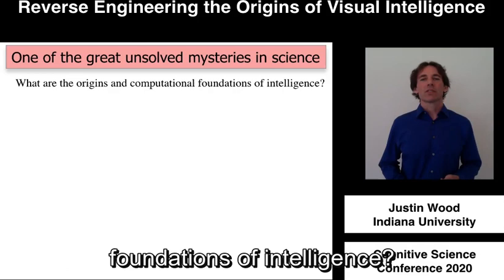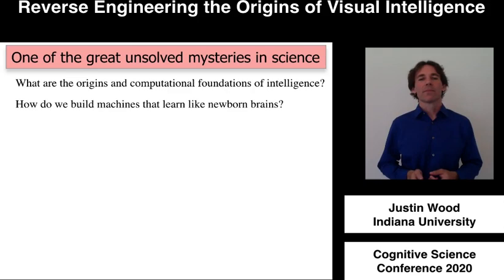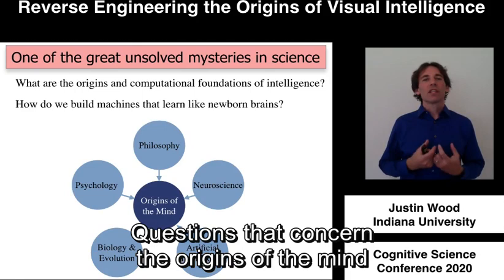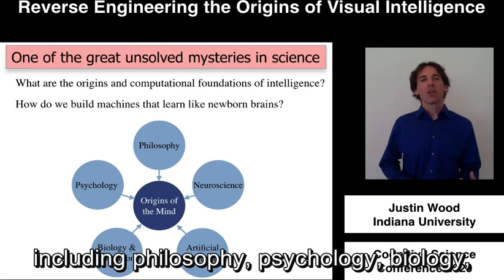How do we build machines that learn like newborn brains? These questions are certainly not new. Questions that concern the origins of the mind are at the heart of many fields, including philosophy, psychology, biology, neuroscience, and artificial intelligence.